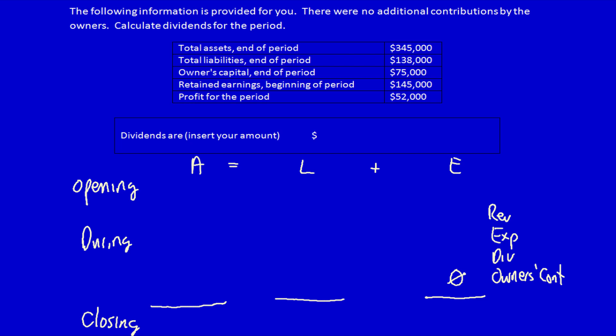Total assets end of the period $345,000. Total liabilities end of the period $138,000. Owners capital end of the period. Now let's go back to the flowchart.